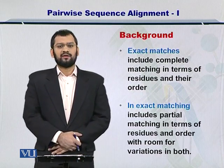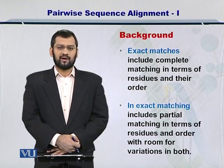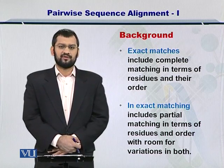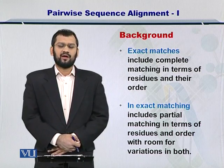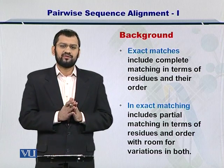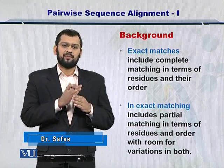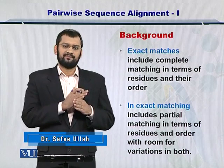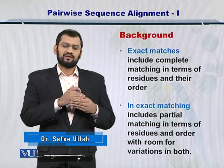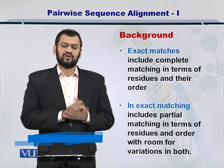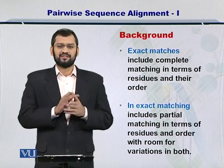You already know that there are two types of matches when you're trying to compare two biological sequences. Exact matches are when you have two sequences matching each other amino acid by amino acid, or nucleotide by nucleotide, in the exact same order. In this way you can obtain an exact match.